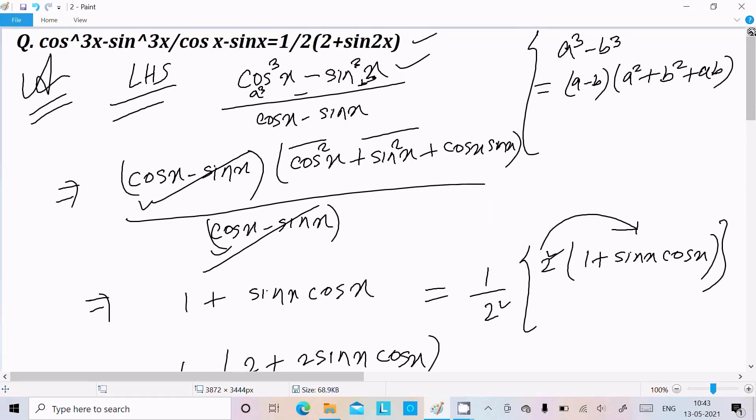One more time going to repeat. So cos³x minus sin³x is there. You need to use this formula and break it into this form. Here after this cancels, cos²x plus sin²x plus cosx sinx remains. Write cos²x plus sin²x, the value is 1. So this value is now 1. So 1 plus sinx times cosx.